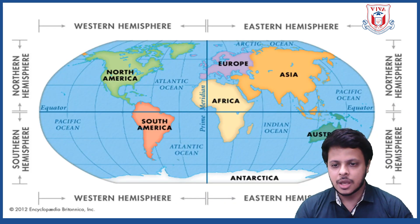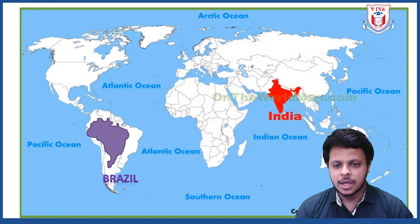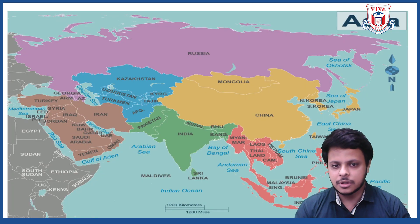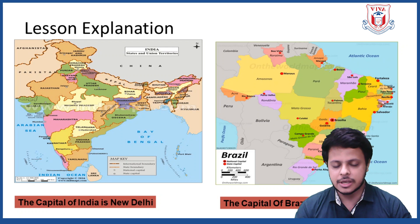So let's see about the countries India and Brazil. India is located in the Asian continent and Brazil is located in the South American continent. The capital of India is New Delhi and the capital of Brazil is Brasilia.